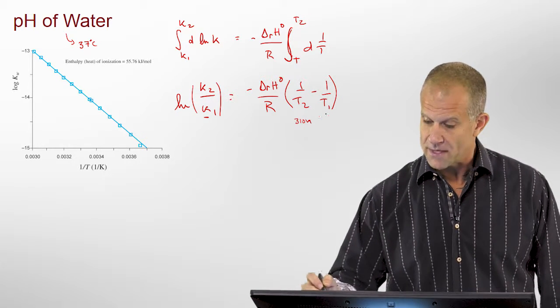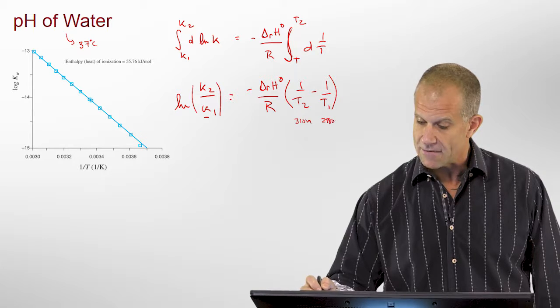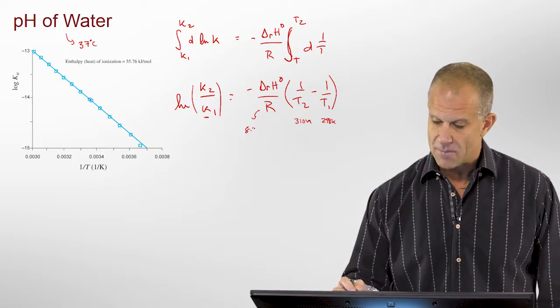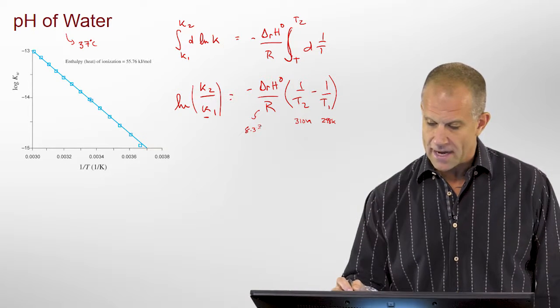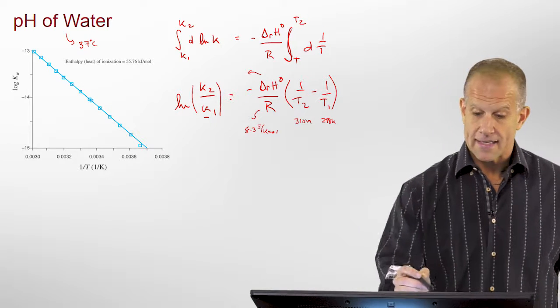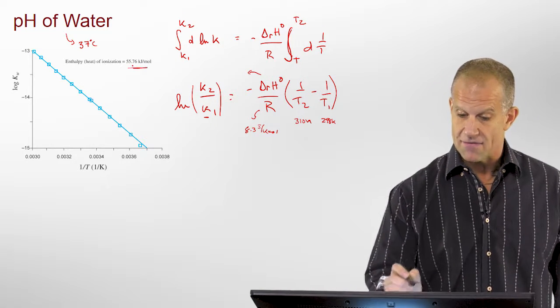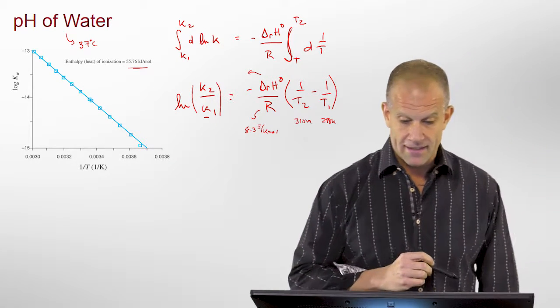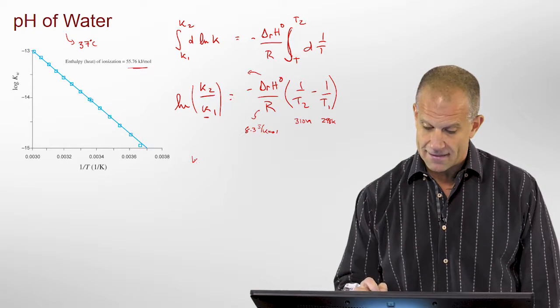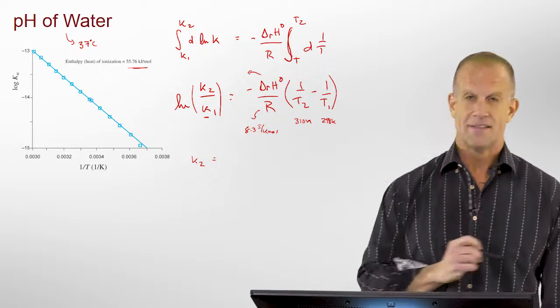We know the gas constant is 8.3 joule per kmol, and we know the delta H from this fit of 55.76 kilojoules per mole, so we can solve, in a sense, for K2, in this case.